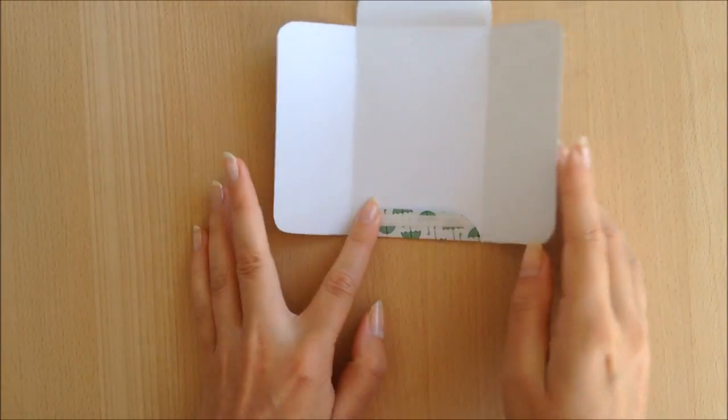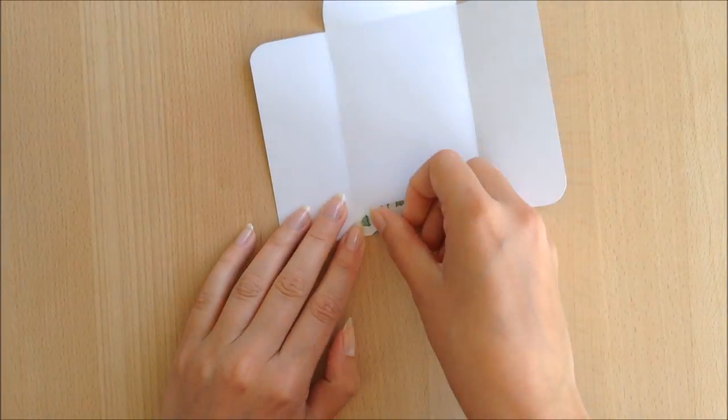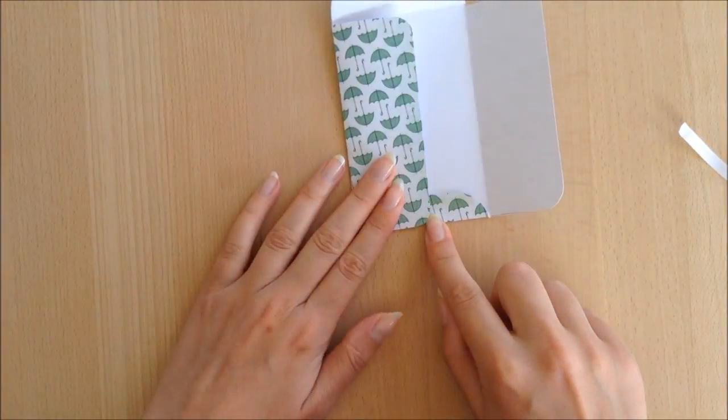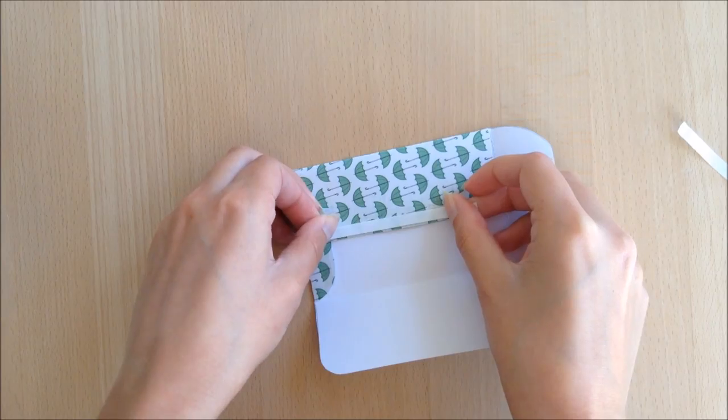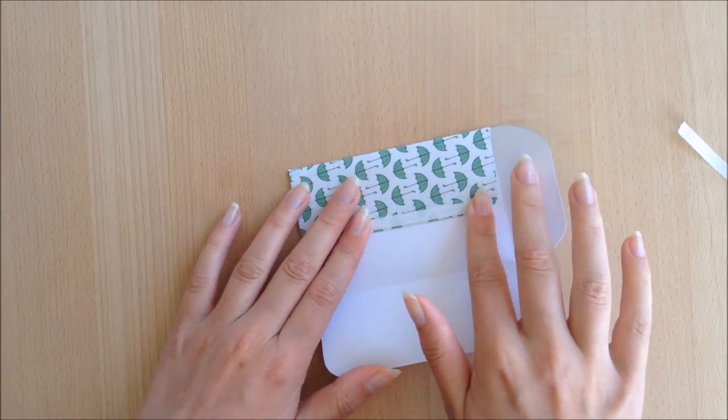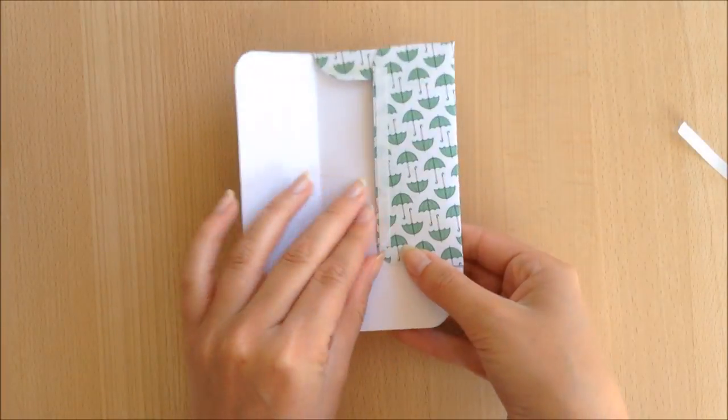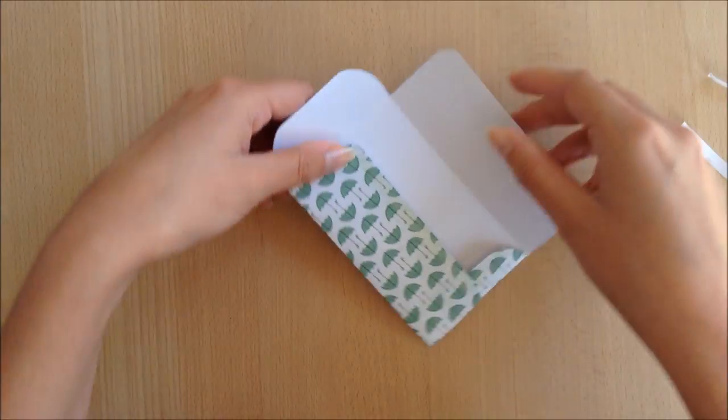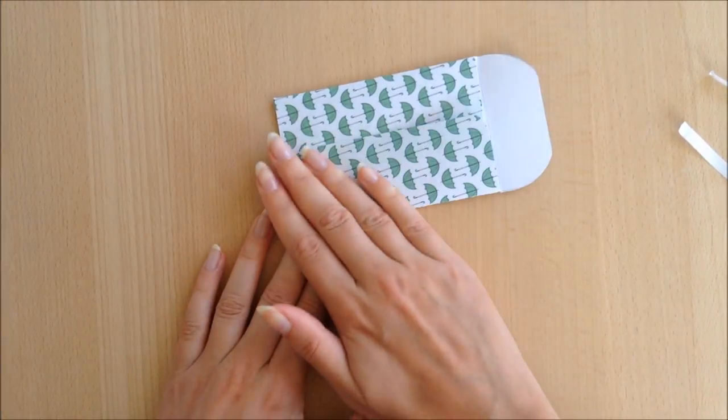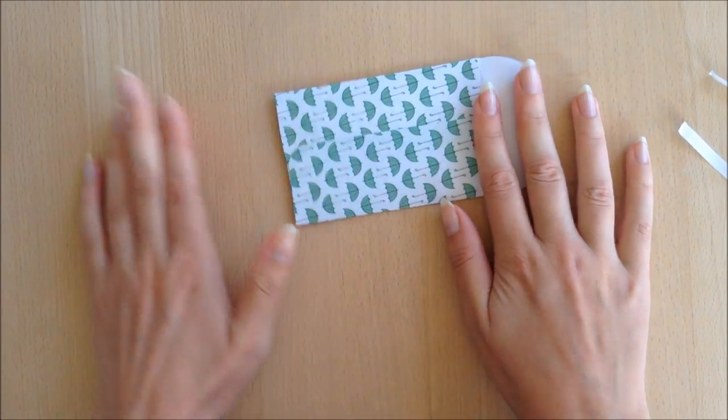Now it's time for the double-sided tape, and I'm gonna start on the bottom, because that's what is going to connect both of the sides. So I'm just gonna place a piece on there, and I'm gonna place another piece of the double-sided tape onto the left side. And now you can stick the last side down, and the envelope is done. So you can put whatever you would like inside of the envelope.